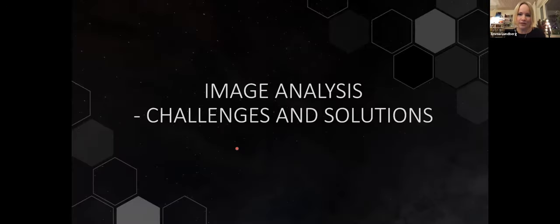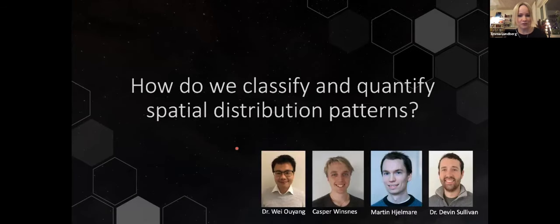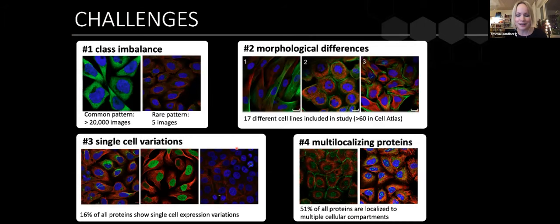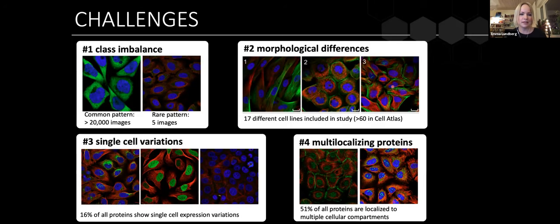Now I'll shift gears to image analysis challenges. How do we classify and quantify spatial distribution patterns? It's not trivial. We have a great class imbalance — some patterns are common, some are rare. We work with 60 different cell lines, and the same protein can look very morphologically different across cell lines. We have single-cell variations and multi-localizing proteins. We annotate 32 different locations, but the combinatorial number of different multi-label combinations is 555 — making it a really hard multi-label classification problem.